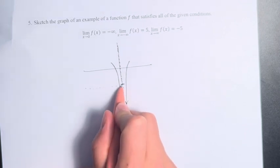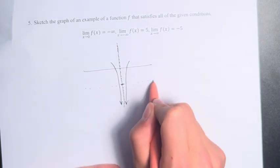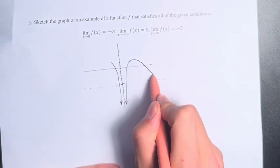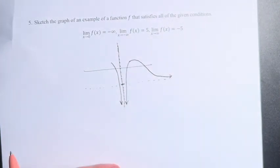then here we have a horizontal asymptote, and over time our function is going to approach that asymptote as it gets closer and closer to infinity, going off in the positive direction.